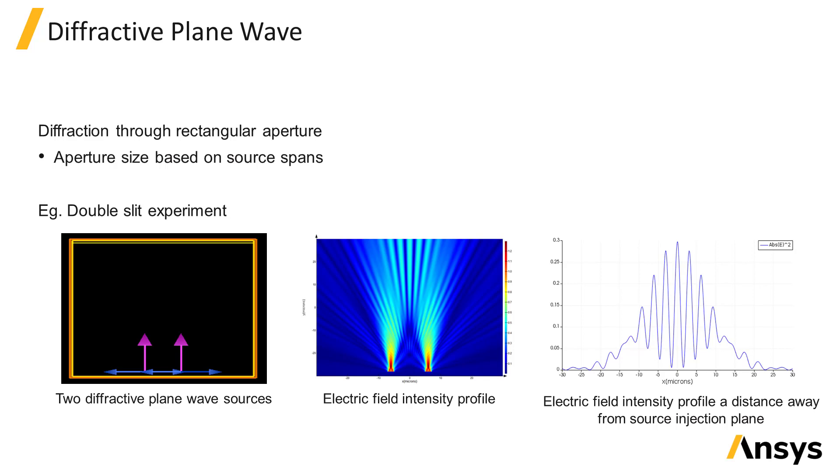For example, in the well-known Young's double slit experiment, a plane wave diffracts through two apertures, and the image of the interference pattern between the light from the two apertures is projected onto a screen some distance away. We have an example of the double slit experiment simulated using plane wave sources in our online knowledge base.